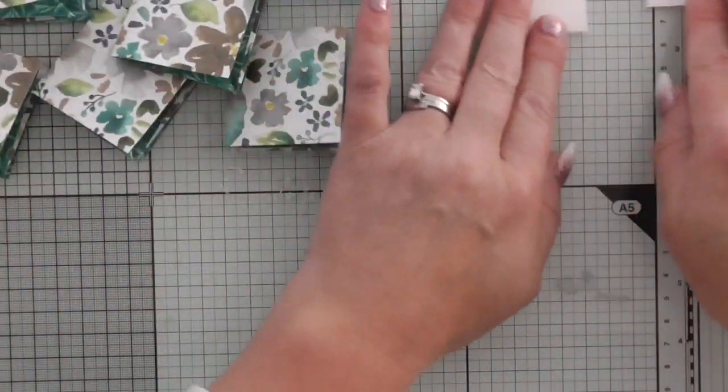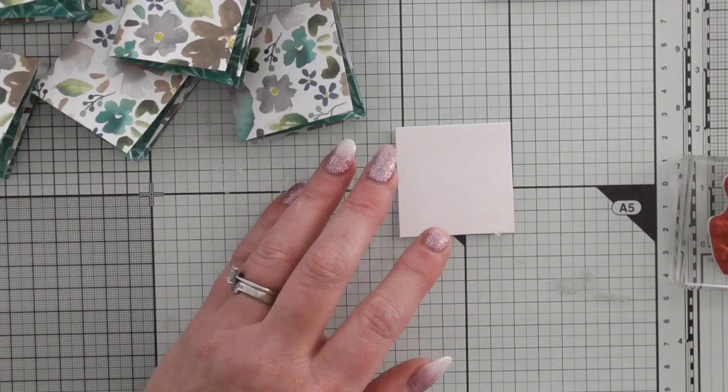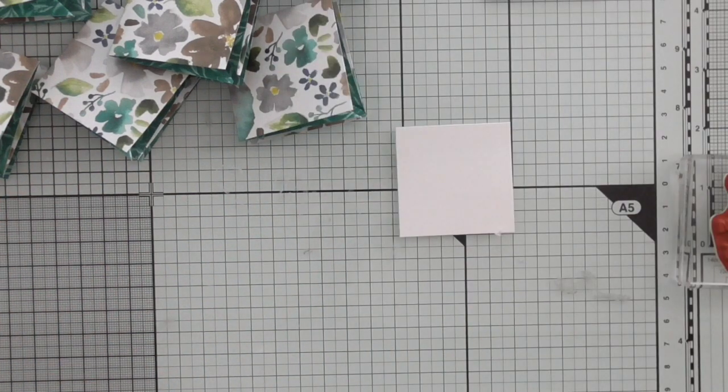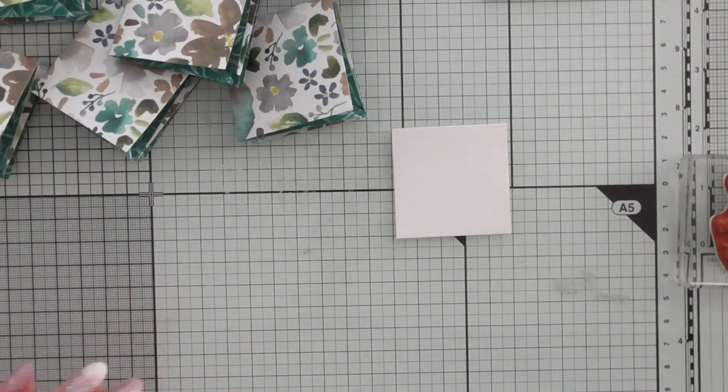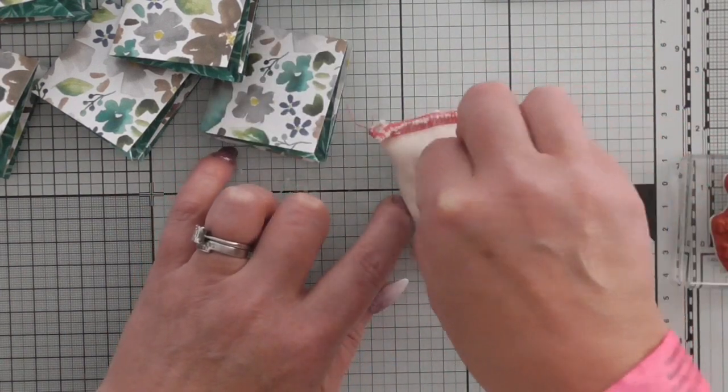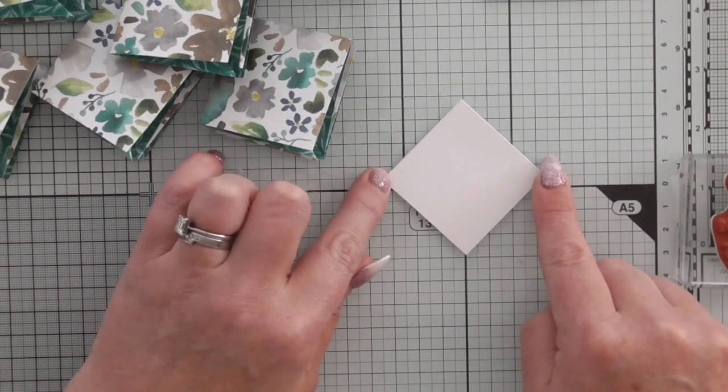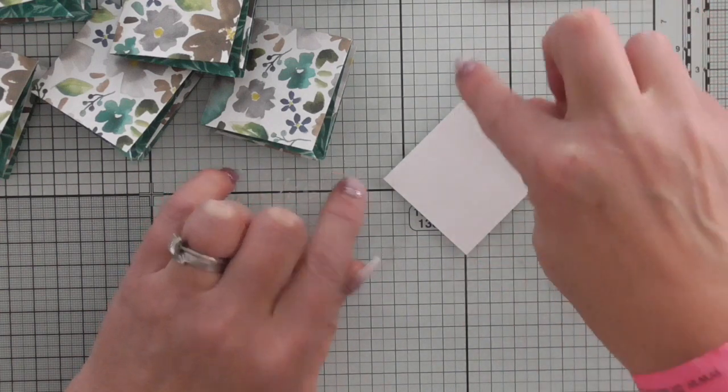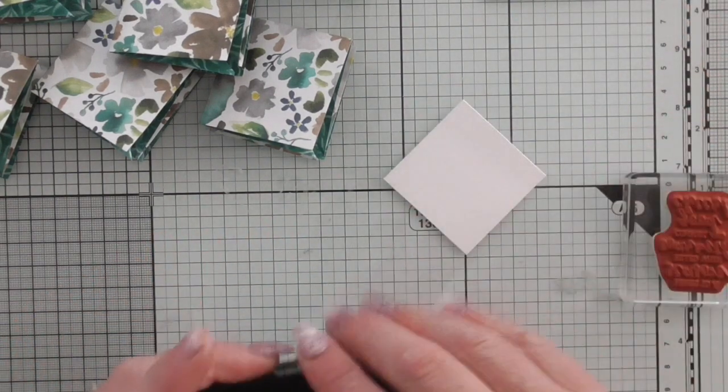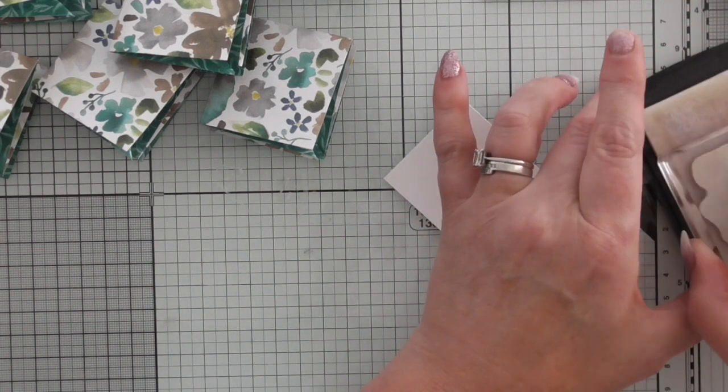So then what we're going to do next is we're going to stamp. And I've chosen just a lovely sentiment from the first frost and it says here's to a season filled with warmth, comfort and good cheer. And we're going to actually emboss it. So I'm going to use my embossing buddha which I like to call a dust buddha.